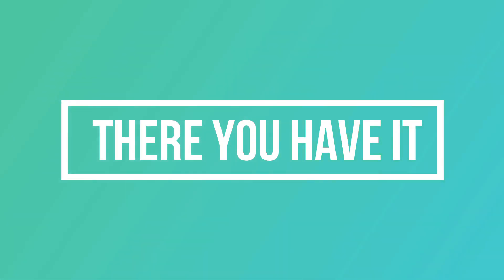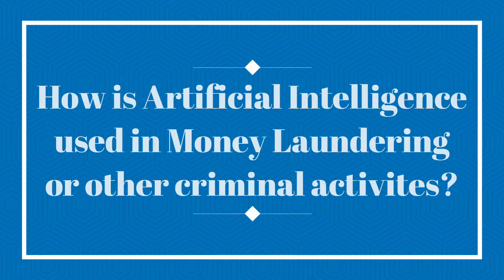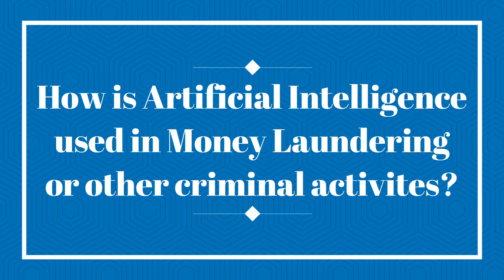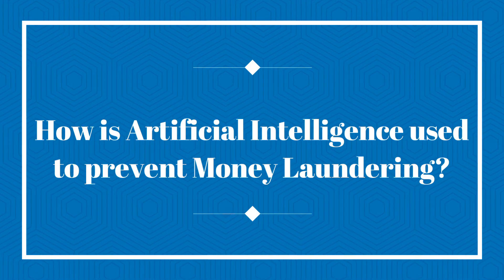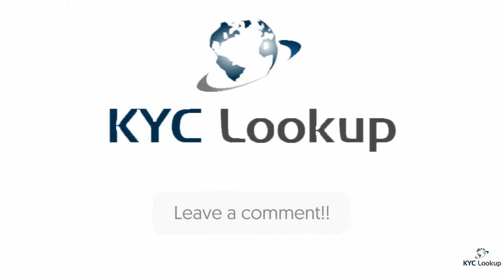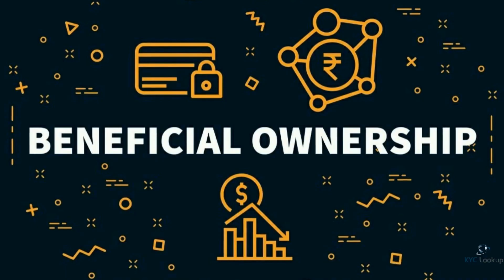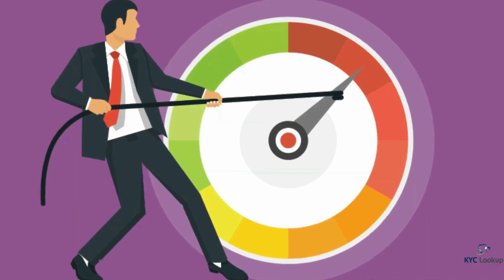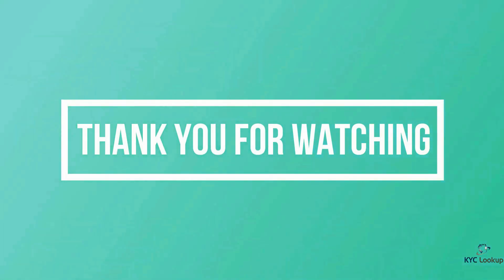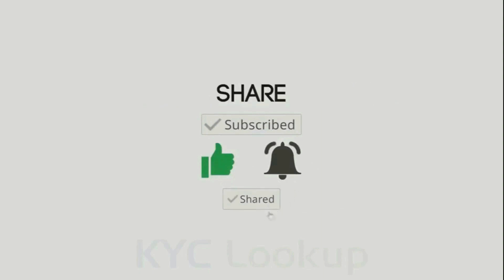Well, there you have it — what is artificial intelligence, how is artificial intelligence used in money laundering and other criminal activities, and how is artificial intelligence used to prevent money laundering. We have now launched our very own courses for you to take a more in-depth look at a variety of subjects, such as introduction to AML, beneficial ownership, and customer risk rating, for example. So make sure you visit our website for further details, and let us help you connect the dots in KYC. Thank you for watching the video, and if you made it this far, don't forget to like and subscribe to watch more amazing videos.